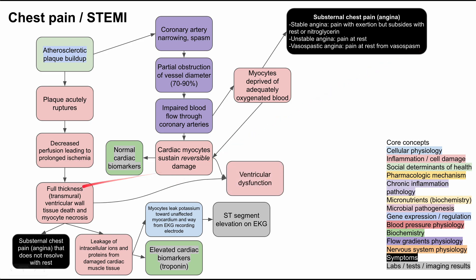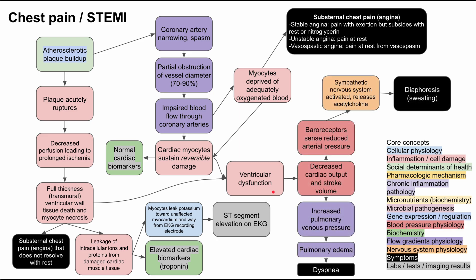In any case, both reversible and non-reversible damage can cause the ventricles of the heart to dysfunction. The heart's primary purpose is to pump blood through the body, and when it does not do that we get other symptoms. A dysfunctioning ventricle leads to decreased cardiac output and decreased stroke volume, which increases pulmonary pressure and venous pressure in the lungs, leading to pulmonary edema and manifesting as dyspnea or shortness of breath.